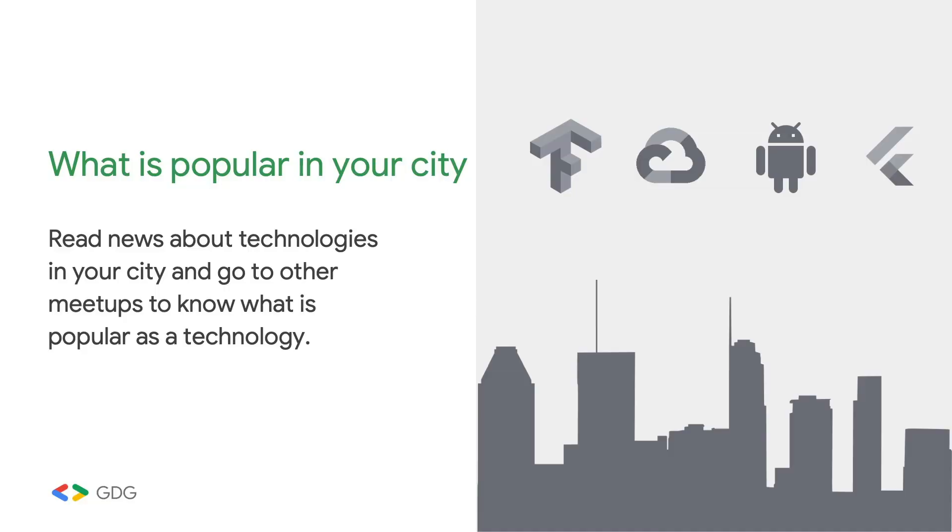An important point is to know what the trends are in your city — what technologies people love — so you can provide content that matches those technologies. Some ideas for great content: popular content like AI is everywhere right now. People are excited about it, so that's one option.